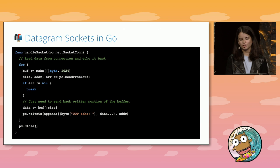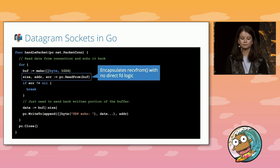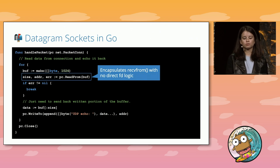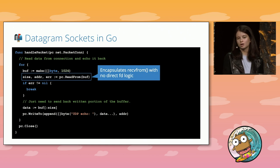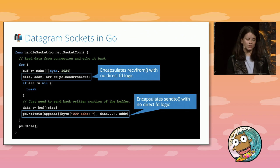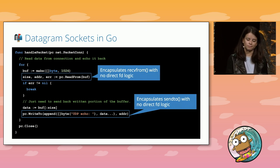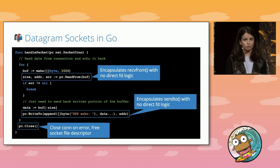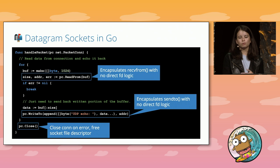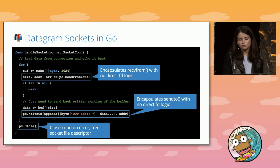Now that we know what the UDPConn allows us to do, let's dive into the handlePacket function. We read packets sent to our socket using ReadFrom, and the return address of the packet sender is stored so we know where to send a response. To echo bytes back to a client, we use WriteTo to create and send a packet to the return address. If we encounter an error reading a packet, we close the datagram socket. Go treats the creation of datagram sockets similarly to streaming sockets, abstracting away system calls to make them easier to use.